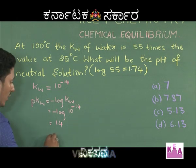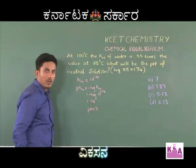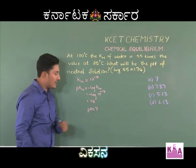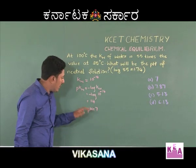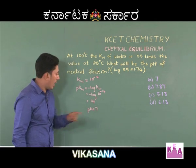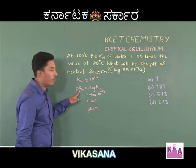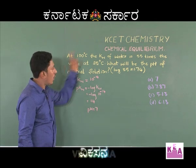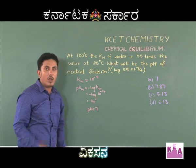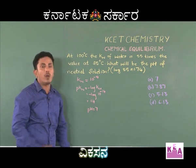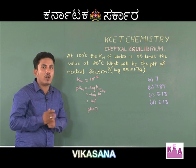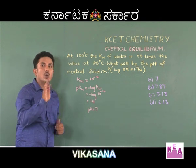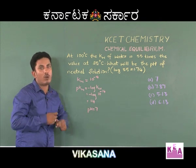For a neutral solution, pH is equal to 7. This clearly indicates that pH for a neutral solution is half the value of pKw. So to solve this problem, we need to find the pKw at 100 degrees Celsius, and then half of that value gives the pH for neutrality.